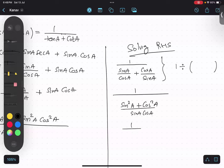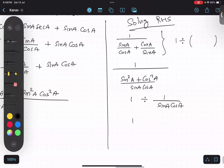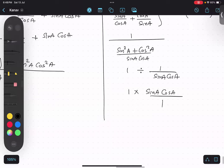Yes, I agree. So I'll just write in a smart manner, one divided by one upon sin A cos A. Make sense? Yes, I agree. So write reciprocal.